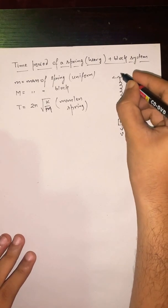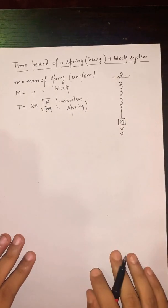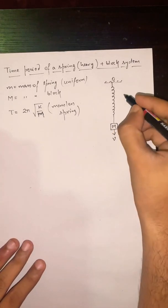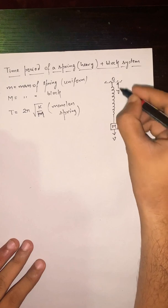We know the speed at the connection point is zero. Let us consider an element at a distance y having length dy, and let the speed of that element be u.